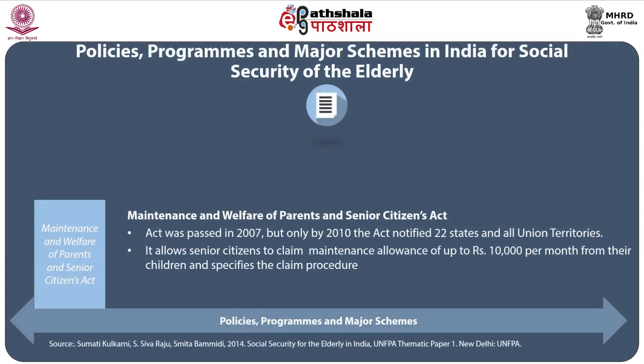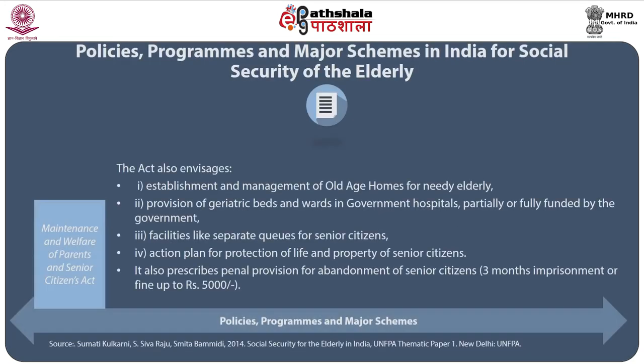By 2010, the act was notified by 22 states and all union territories. It enables senior citizens to claim maintenance allowance of up to Rs. 10,000 per month from their children and specifies the claim procedure. The act also envisages establishment of old age homes, provision of geriatric wards in government hospitals, separate queues for senior citizens, and an action plan for protection of the life and property of senior citizens. It also prescribes penal provisions for the abandonment of senior citizens — up to 3 months imprisonment or a fine of up to Rs. 5,000.